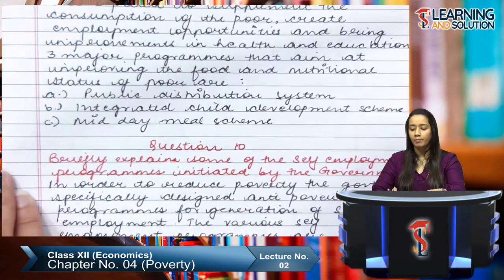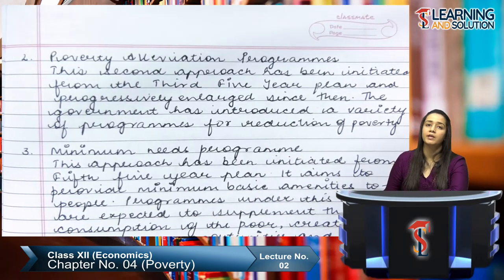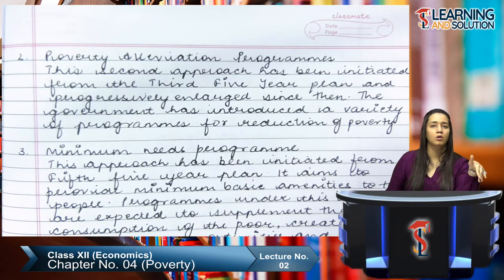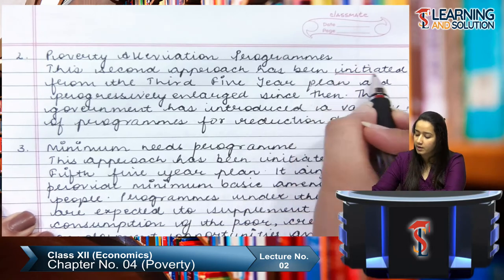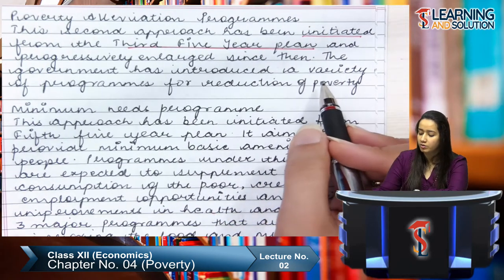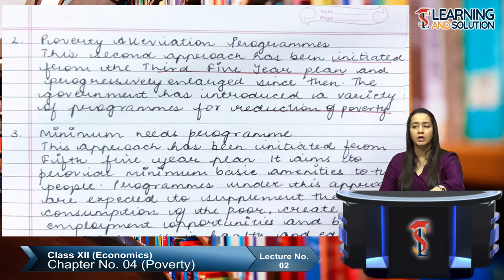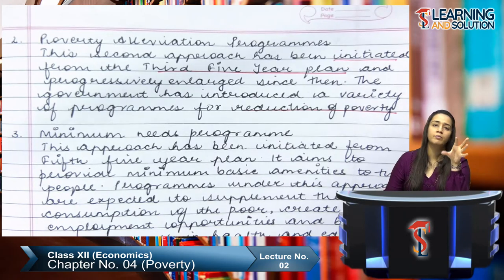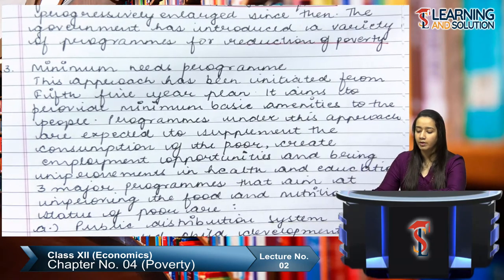The second approach was poverty alleviation programs. This was initiated from the third five-year plan and progressively enlarged since then. The government introduced a variety of programs for the reduction of poverty, targeted specifically at the poor people. So the second approach, begun in the third five-year plan, aimed at introducing specific programs and initiatives targeting poor people only.